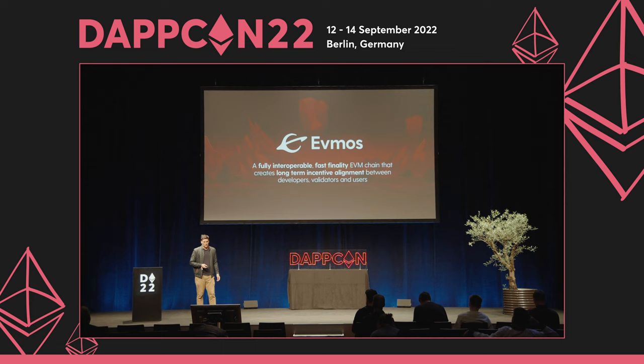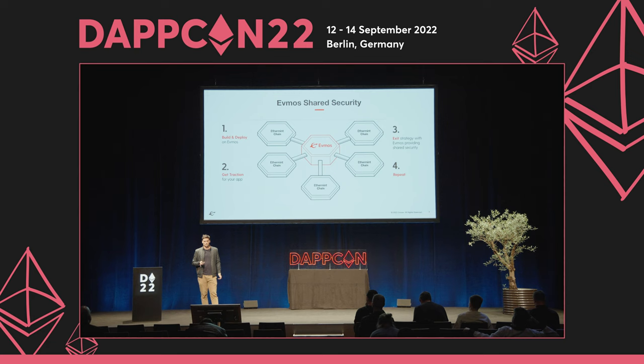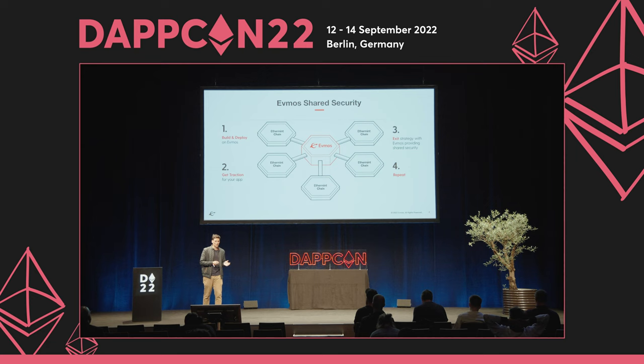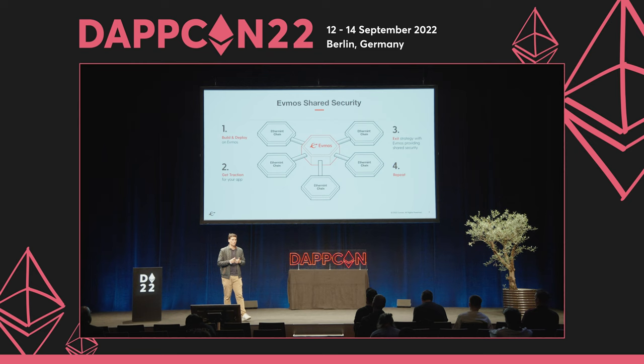Evmos is a fully interoperable and fast-finality EVM chain that aims to create long-term incentive alignment between developers, validators, and users. We do that by offering a shared security model, which in our view is how applications will be able to scale from a shared state like the EVM into their own application-specific blockchains — EVM-compatible — without any loss of composability, and without needing to redeploy essential integrations like block explorers, multisig environments, oracle providers, or indexers.